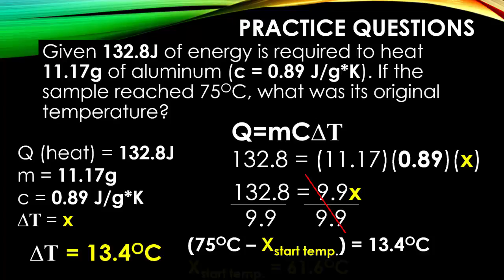If you do the math to get x by itself, you will figure out that it's 61.6 degrees Celsius. That was our original starting temperature that the aluminum was at before it was heated.